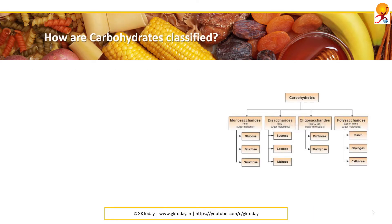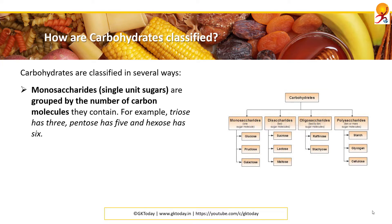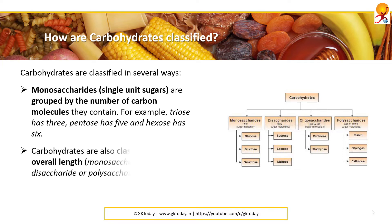How are carbohydrates classified? They are classified in several ways. For example, monosaccharides or single unit sugars are grouped by the number of carbon molecules they contain — triose has three, pentose is five, and hexose is six. Carbohydrates are also classified by their overall complexity, like monosaccharides, disaccharides, or polysaccharides, or by their function.